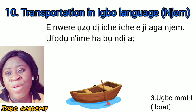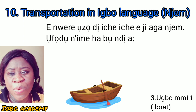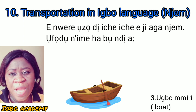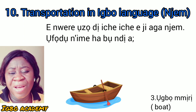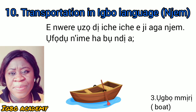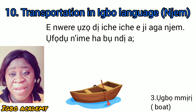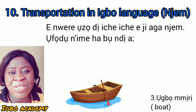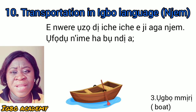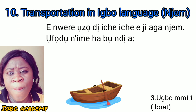Number three, we have the boat. The boat is called Uwamili. That is our third means of transportation — the boat, which is called Uwamili.